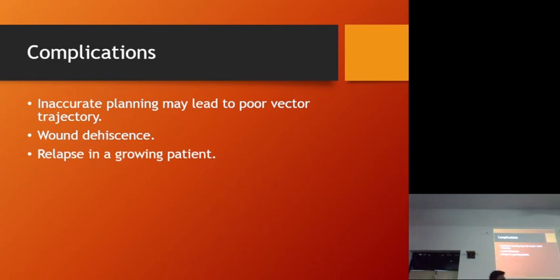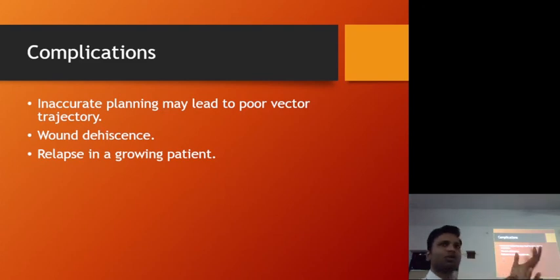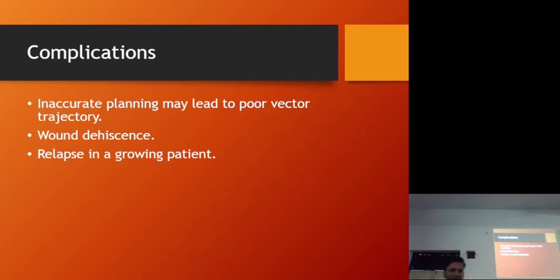Suppose in a growing patient we need 10 mm of bone — we are going to achieve around 13 to 14 mm. Initially it won't look ideal, but once the patient's growth has occurred, the overgrowth will look normal because the rest of the facial bone and musculature have grown. So in case of a growing patient, we have to overcorrect the defect.